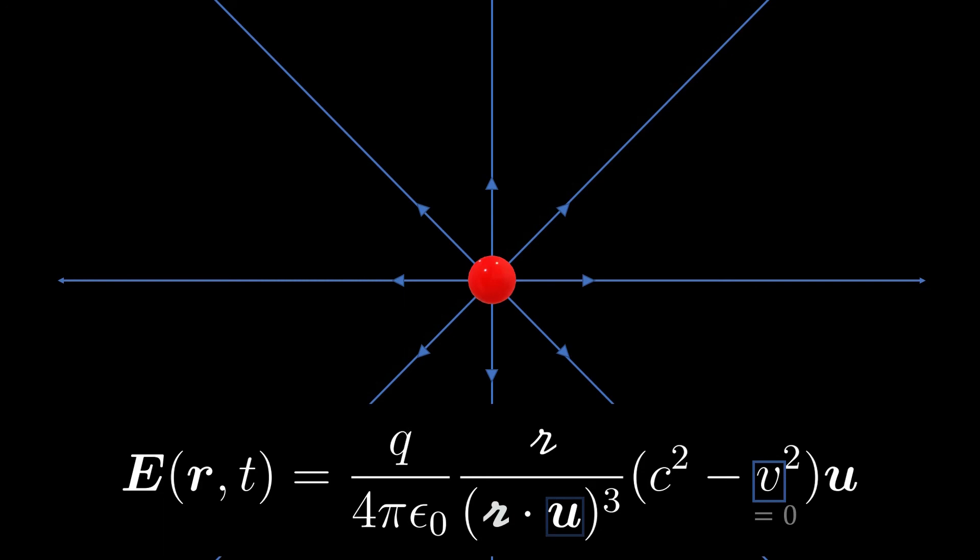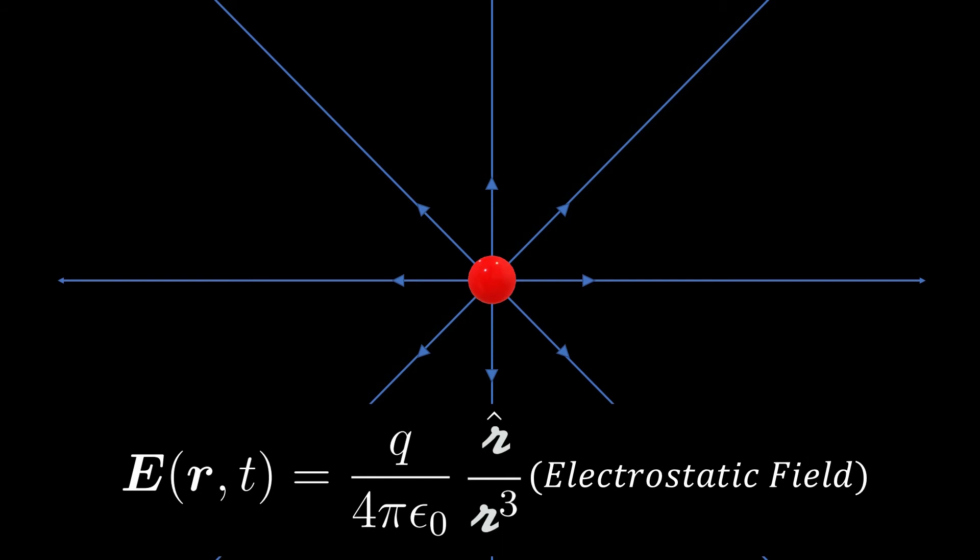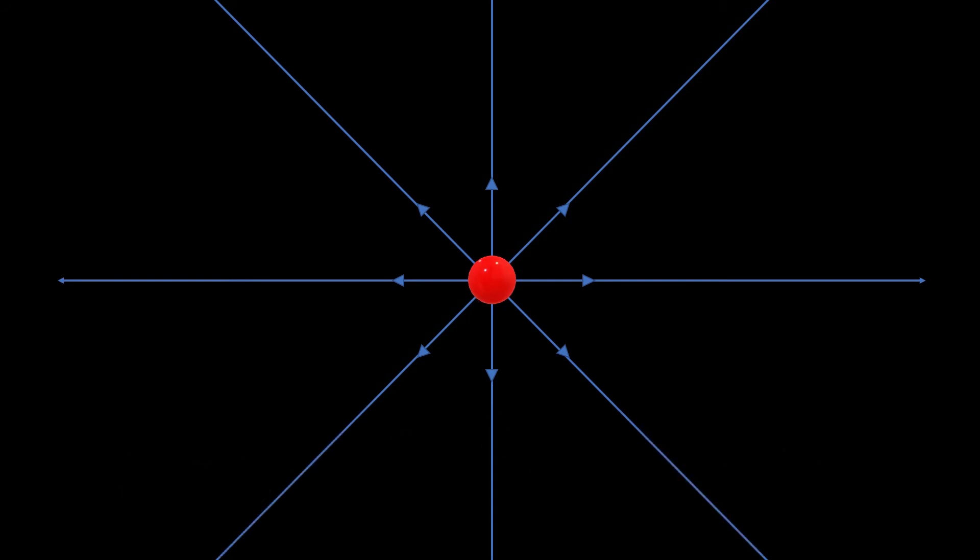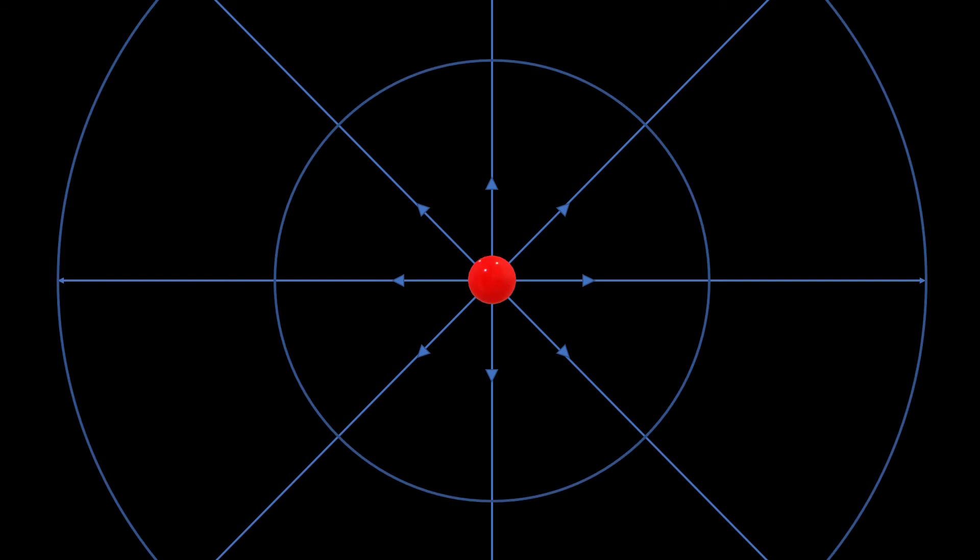When the charge is not moving, v becomes 0, and the equation reduces to the familiar electrostatic field equation given by Coulomb's law. The electric field can also be represented by equipotential lines for better visualization.